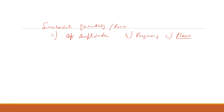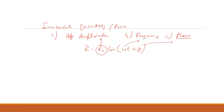For example, in your lower classes you have written E equals E₀ cos(ωt + φ). Here, E₀ is the amplitude — the maximum value of the electric field. Omega (ω) is the angular frequency, and phi (φ) is the phase.